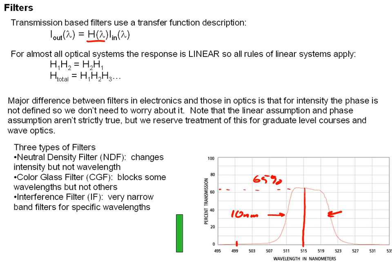Of course, if light of 500 nanometers comes along, practically none of the light will get through because the transmission there is pretty much close to zero.